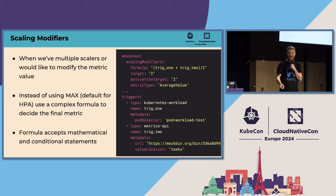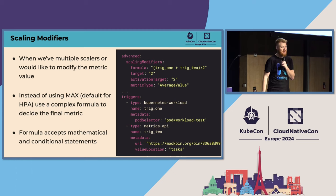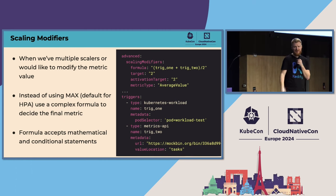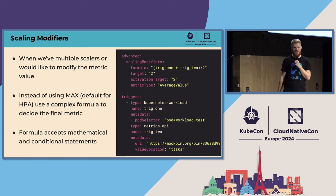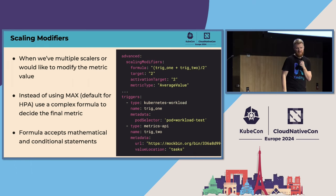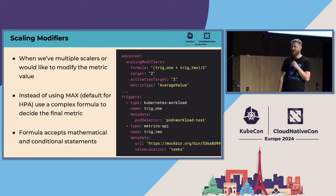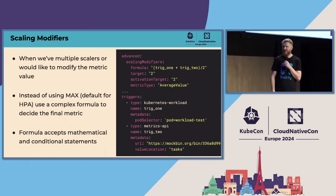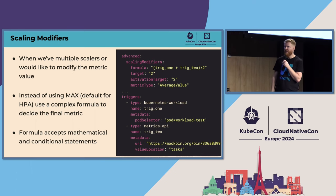As Jorge mentioned, HPA makes decisions based on the maximum. Imagine you have multiple triggers in the ScaledObject — say multiple RabbitMQ triggers. HPA collects metrics from each source, calculates the desired replica count, and selects the maximum. For users who want more logic, we introduced Scaling Modifiers. It's not just average or sum — you can specify a full mathematical formula to do a lot of cool things with the metrics.